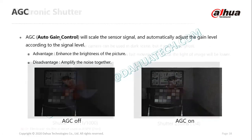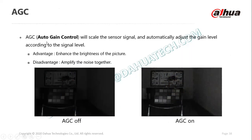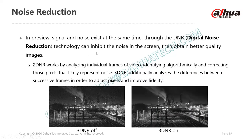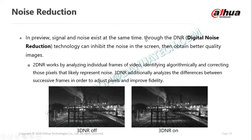We mentioned AGC — auto gain control — for improving low light performance. AGC technology creates a brighter image; however, noise is also amplified together with the image. To reduce noise created from AGC, our cameras support 2DNR and 3DNR noise reduction. Most cases you would opt for 3DNR, so get a camera that supports 3DNR.